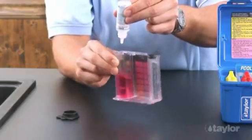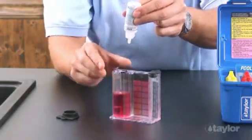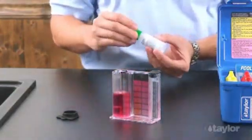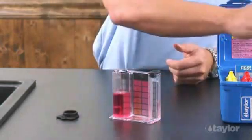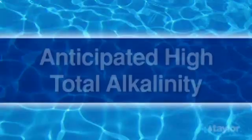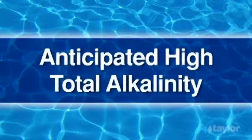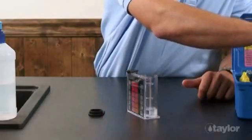Multiply the drops in the previous step by 10. Record as parts per million total alkalinity as calcium carbonate. When high total alkalinity is anticipated, this procedure may be used.